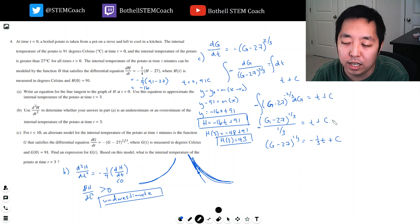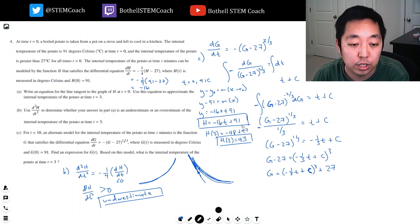So negative (g minus 27)^(1/3) equals negative t plus c. If I multiply through by negative one-third, I get (g minus 27)^(1/3) equals negative one-third t plus c. The constant, you just leave alone until you have to solve for the thing. Then I'm going to cube both sides, so g minus 27 equals (negative one-third t plus c)³.